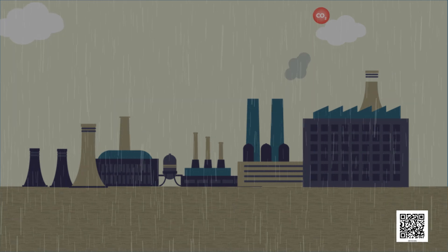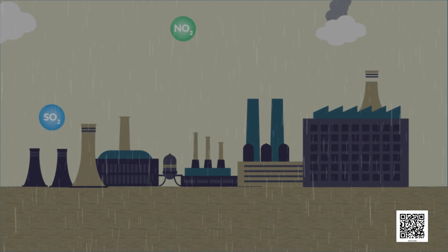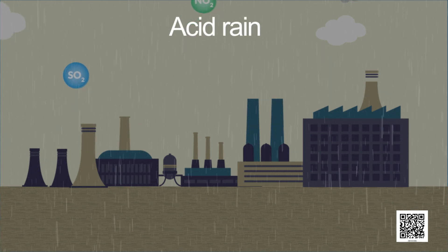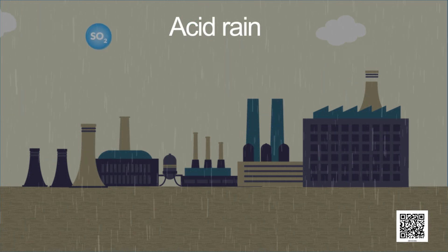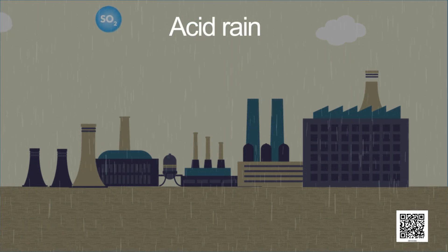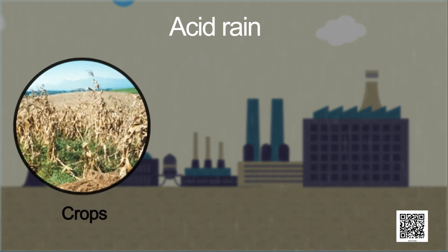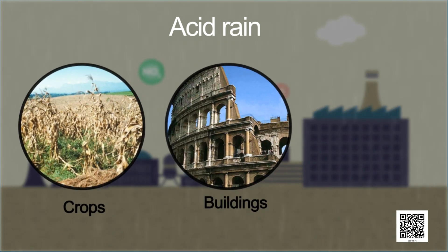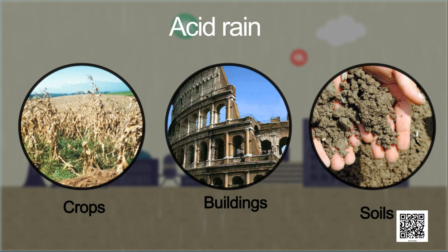Oxides of sulphur and nitrogen dissolve in rainwater and form acids. Such rain is called acid rain. It is very harmful for crops, buildings, soils, and animals.